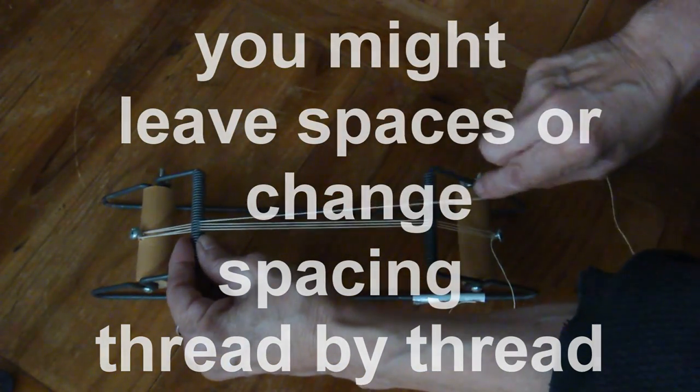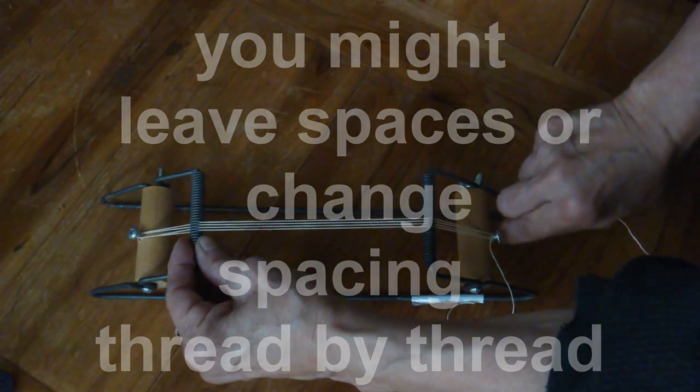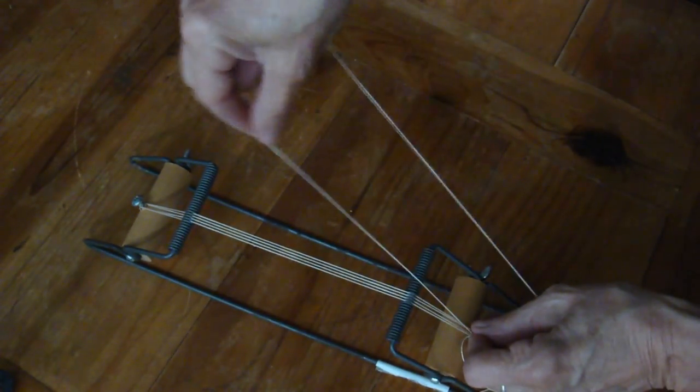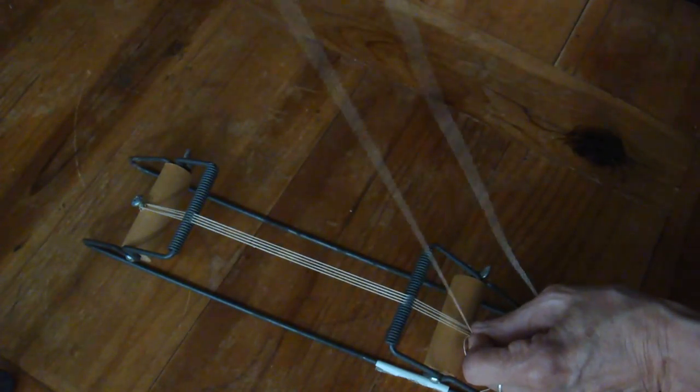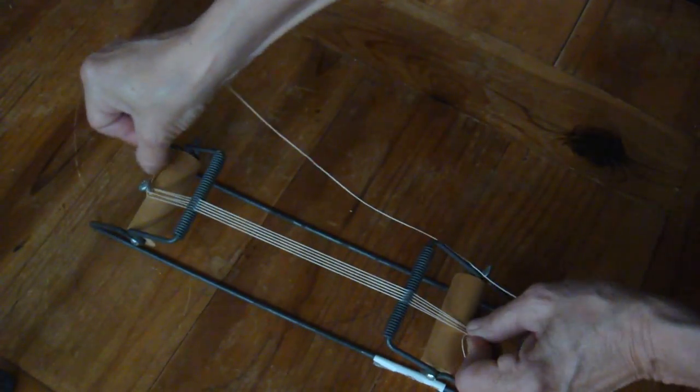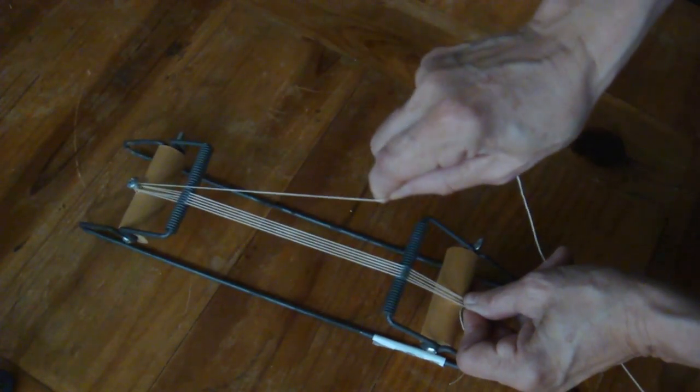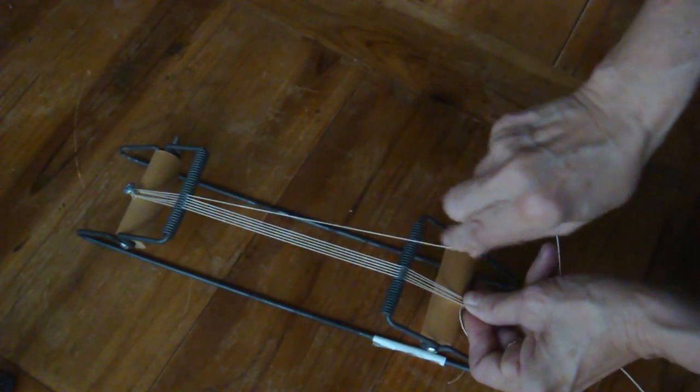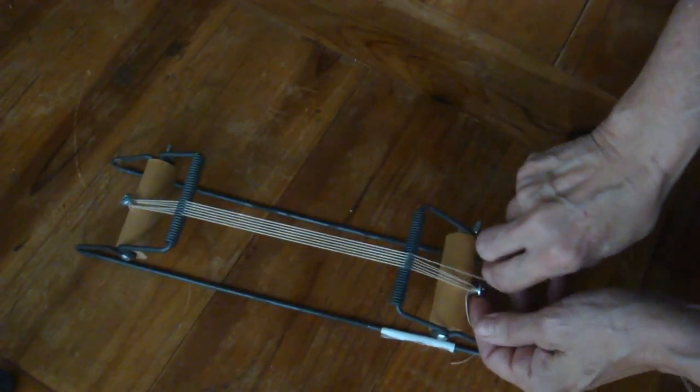I'm just fiddling here to make sure you can see it in the camera. But the idea is, you're just going around these screws, spacing them out, and you don't use a lot of warp yarn, and it's really not hard to get the tension.